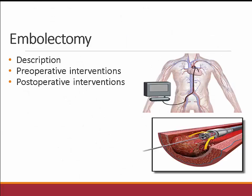An embolectomy is removal of an embolus from an artery using a catheter. Preoperative interventions include obtaining a baseline vascular assessment, administering anticoagulants and thrombolytics as prescribed, and maintaining the extremity in a slightly dependent position. Postoperative interventions include instructing the patient about anticoagulant therapy and hazards associated with the medications.